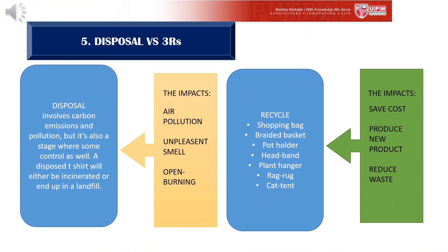The fifth phase is disposal versus recycling. Disposal involves carbon emissions and causes pollution, but it is also a stage where some control can be applied. A disposed t-shirt will either be incinerated or end up in a landfill. Improper disposal builds habitats for pests such as rats and cockroaches and causes unpleasant smells. Incineration also causes air pollution. For recycling, old t-shirts can be repurposed as shopping bags, braided baskets, and so on.